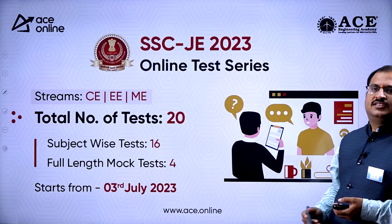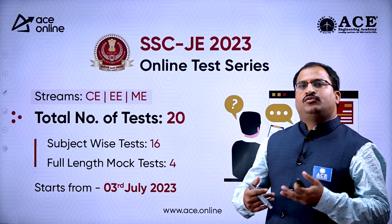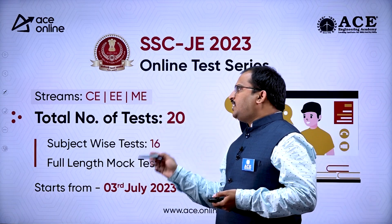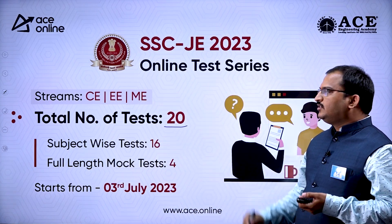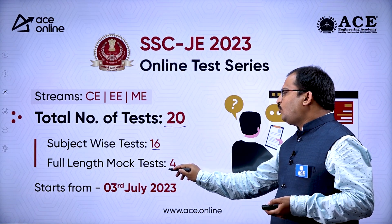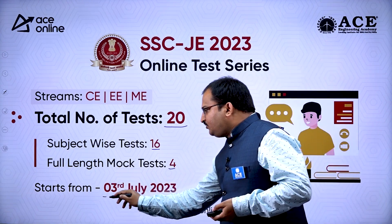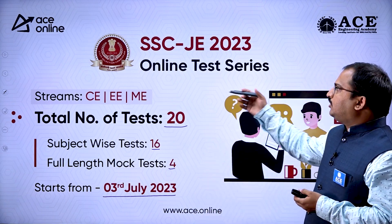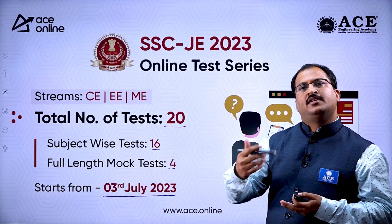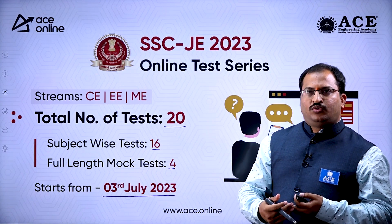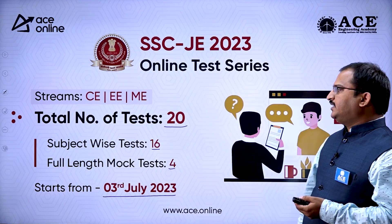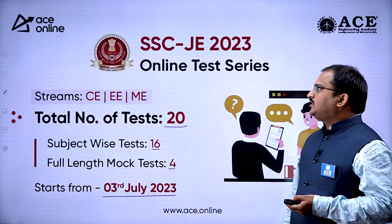Coming to the test series — if you want to purchase only the test series, go to the ACE Engineering Academy website or ACE.online website and choose your required branch. There are a total of 20 tests for SSC JE 2023: 16 subject-wise tests and 4 full-length mock tests. The test series starts from 3rd July 2023. Students who have purchased the ACE Online self-paced program get the test series free; others can purchase it separately from the websites.